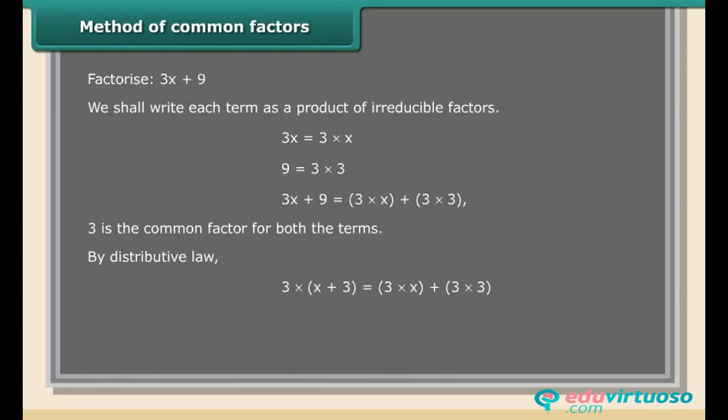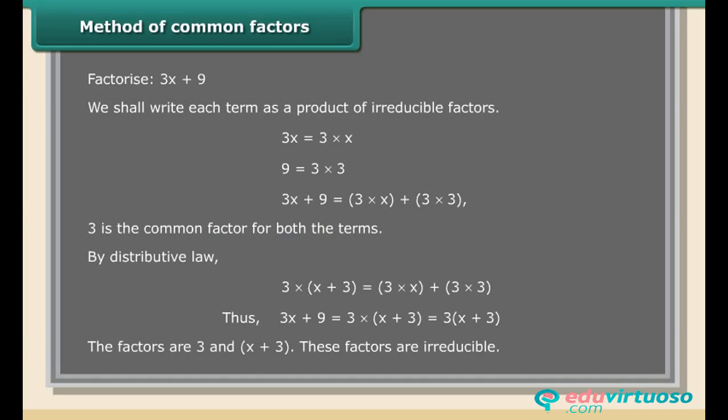By the distributive law, 3 × x + 3 × 3 = 3(x + 3). These factors are irreducible.